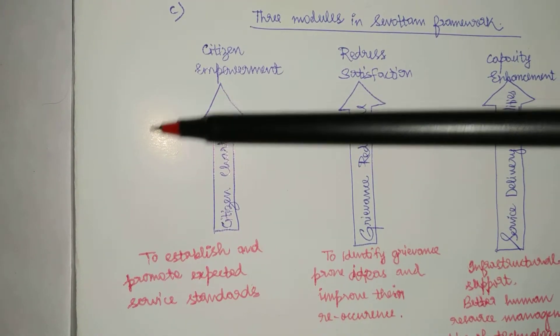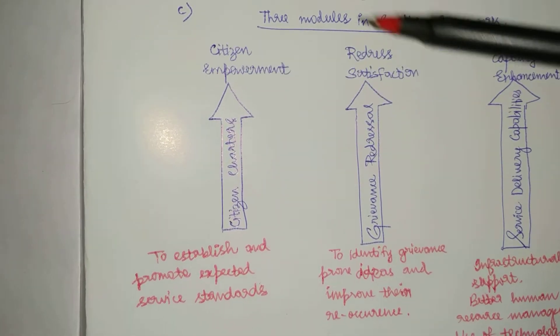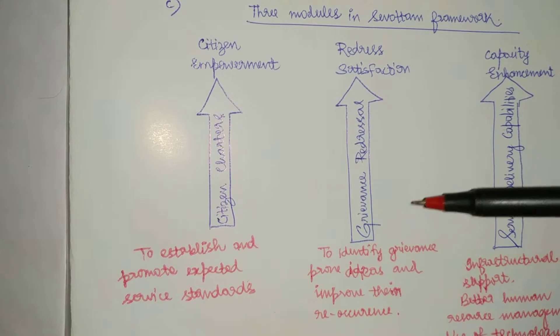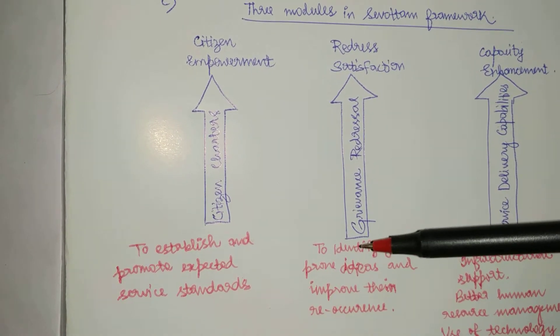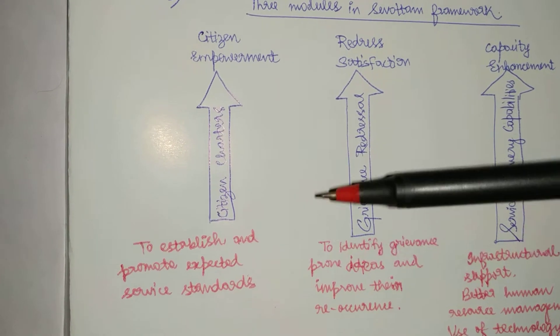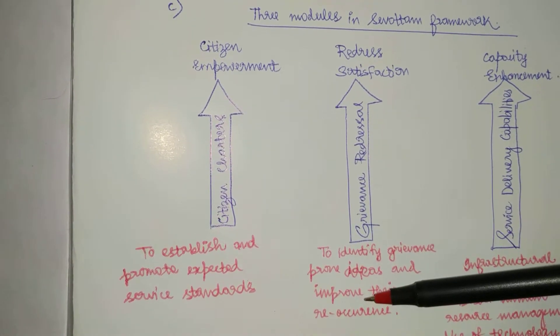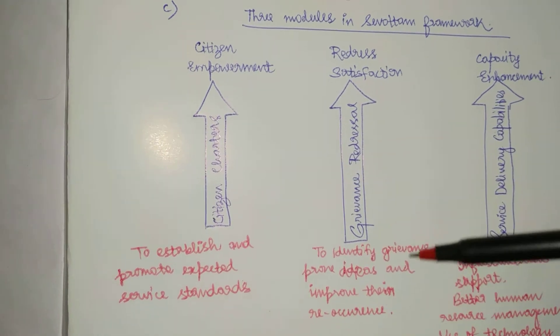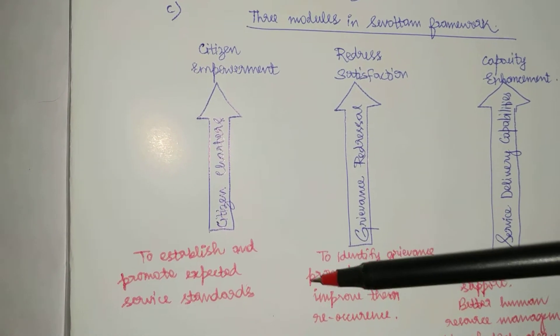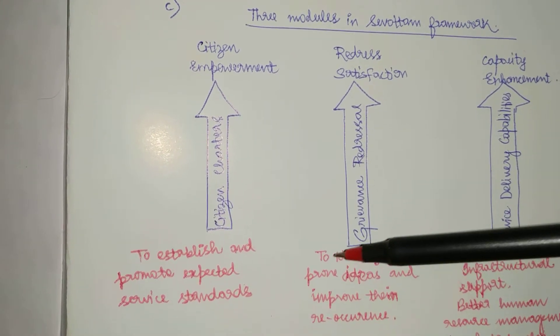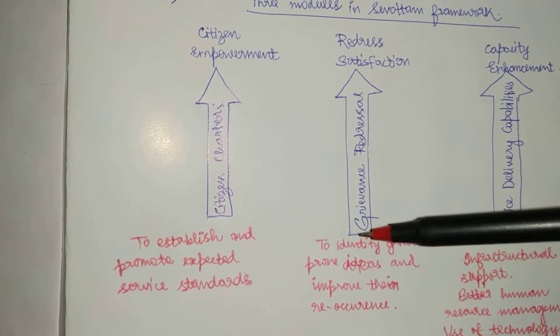Now once the goal is fixed, the grievance redresser identifies the grievance prone areas and improves them so that they can't be recurred. So in those norms, what are the areas which the customers don't like?